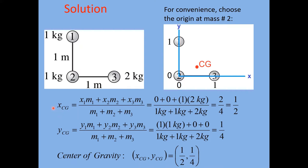To calculate the X coordinate of the CG, we multiply each object's X position by its mass. Object 1 has X = 0 and object 2 has X = 0, so those terms vanish. Only object 3, at 1 meter with a mass of 2 kilograms, contributes: 1 × 2 = 2 in the numerator. The denominator is the total mass: 1 + 1 + 2 = 4 kilograms. So X_CG = 2/4 = 1/2 meter.